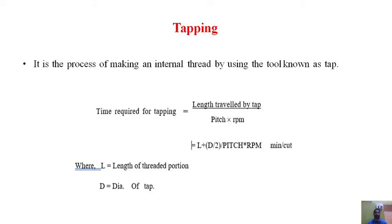In today's session, we are discussing the tapping operation. As you know, tapping is nothing but producing the internal thread in already drilled holes. If you want to make a thread in the tapping operation, you need an already drilled hole, and on that hole you apply the tapping operation. Tapping is making the internal thread by a special tool known as TAP.